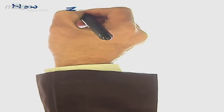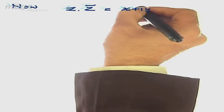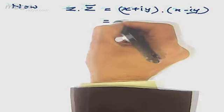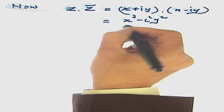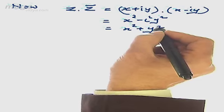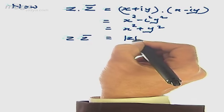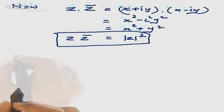If we multiply z and z̄ we get (x + iy)(x − iy) = x² − i²y² = x² + y². Therefore z·z̄ = |z|². You must remember that |z|² = z·z̄.